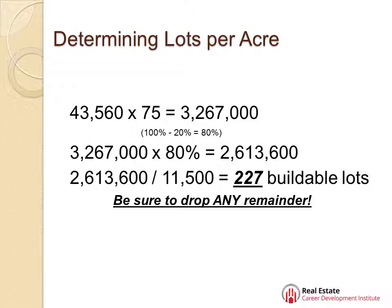We come up with 227, but let me caution you — on this particular type of problem, if you have a remainder, you're going to drop it no matter how high it is, because it's not large enough to put another house on. Even if it was 227.99, you're going to drop the .99 and your answer is 227. If you round it up to 228, I can almost guarantee that's going to be a wrong answer on the test. So be sure to drop any remainder.